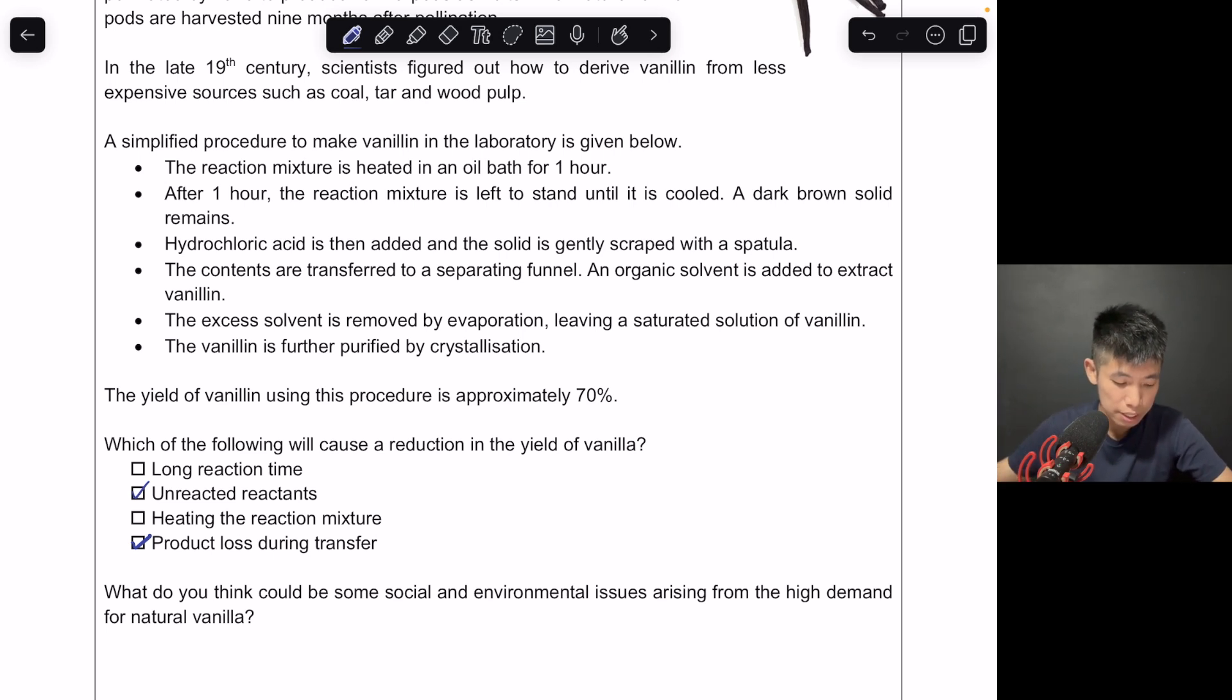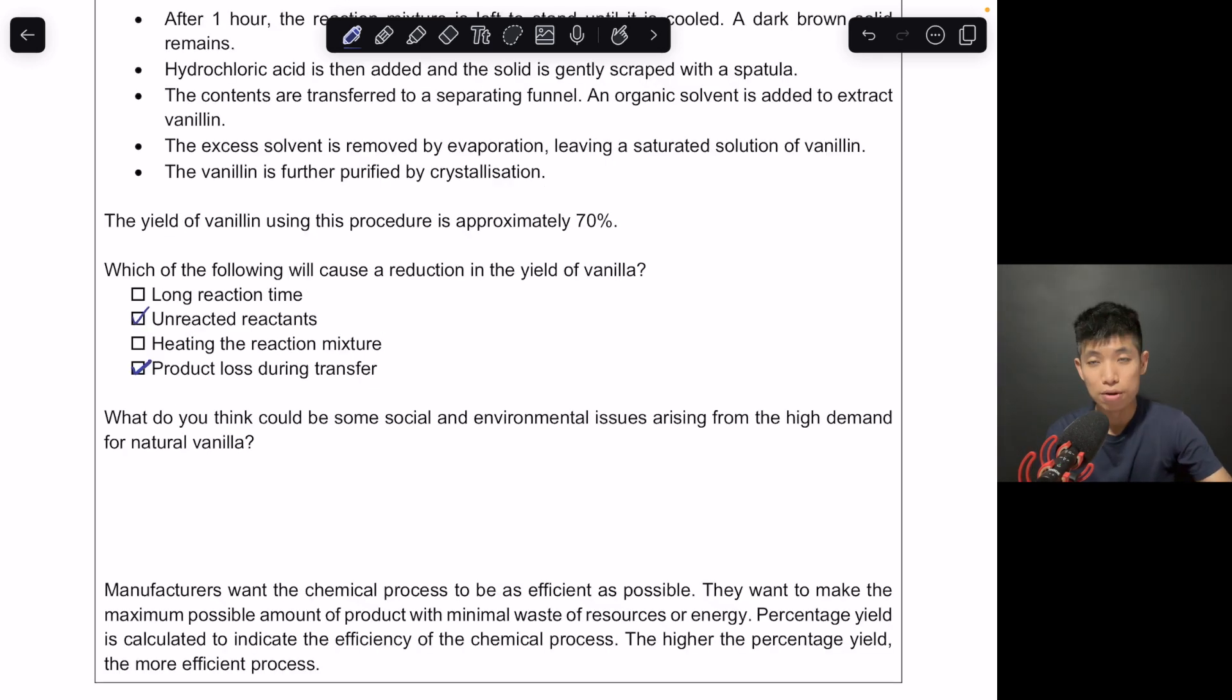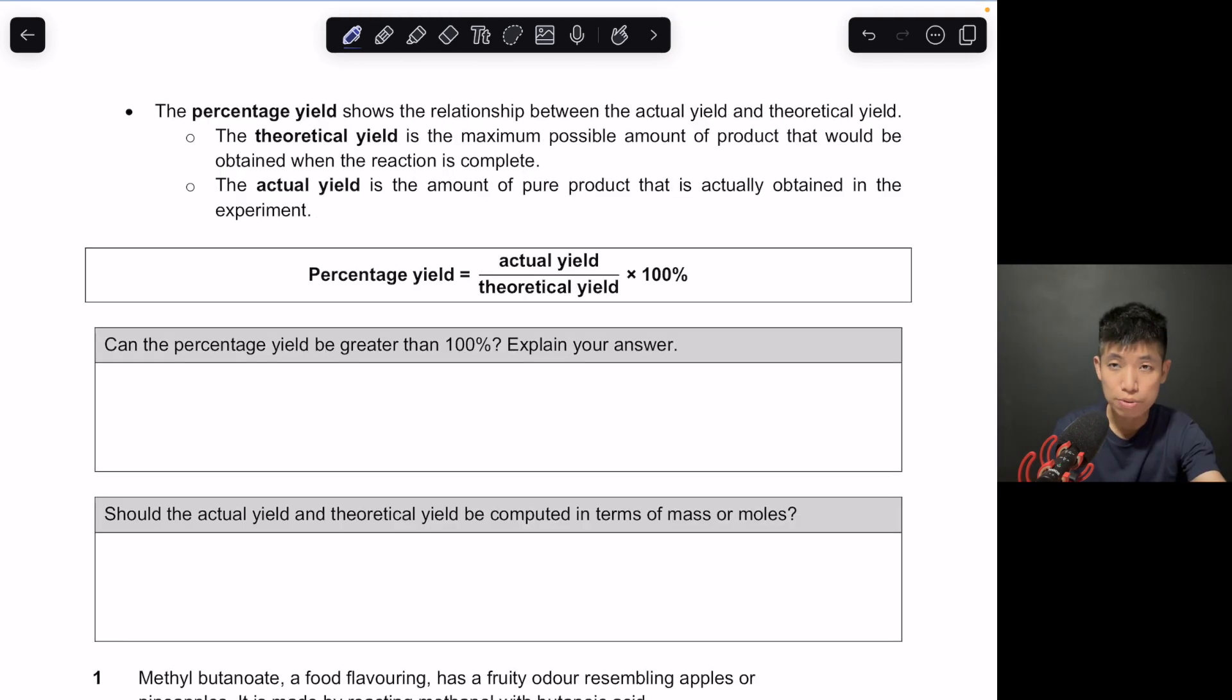So you may not get a 100% conversion of the reactants to products. So these are the two main factors that will cause a reduction in the yield. Reaction time and heating, not really, unless you are doing it such that the product that you want decomposes to form something else, then you may get a lower yield at the end. I'll leave you to think about the question regarding social and environmental issues on your own. But to stress that when we manufacture something, we want the yield to be as high as possible because that relates to an efficient process.